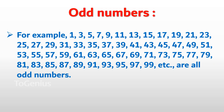For example, 1, 3, 5, 7, 9, 11, 13, 15, 17, 19, 21, 23, 25, 27, 29, 31, 33, 35, 37, 39, 41, 43, 45, 47, 49, 51, 53, 55, 57, 59, 61, 63, 65, 67, 69, 71, 73, 75, 77, 79, 81, 83, 85, 87, 89, 91, 93, 95, 97, 99, etc. are all odd numbers.